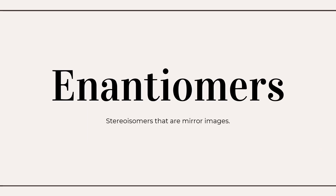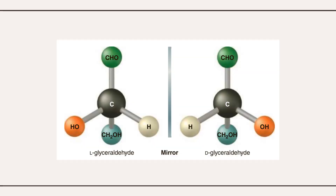What are enantiomers? Stereoisomers that are mirror images are called enantiomers. They have the same molecular formulas but different spatial arrangements of their atoms, and no amount of rotation can convert one structure into the other. Glyceraldehyde is an example — we have a pair of enantiomers: L or left-handed glyceraldehyde and D or right-handed glyceraldehyde. The D and L designations come from the Latin words dextro, meaning right, and levo, meaning left.